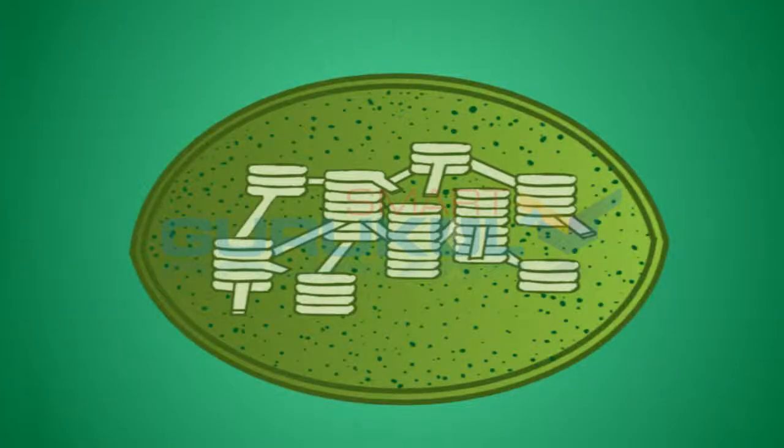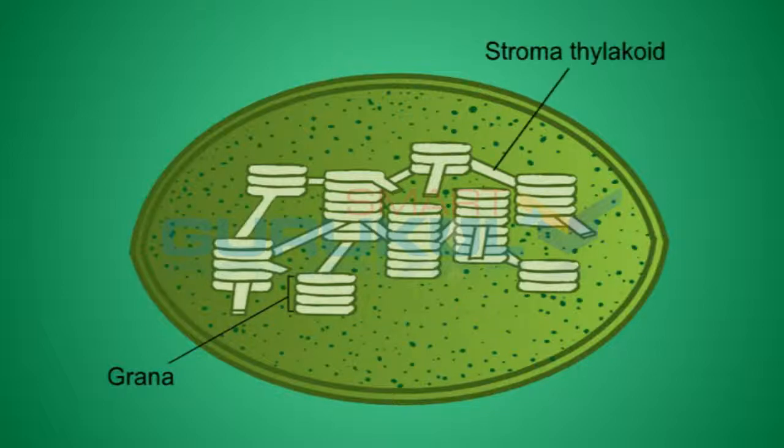These chloroplasts are oval-shaped and are filled with colorless fluid called stroma. Inside the stroma, many disc-like structures called thylakoid membranes are observed. These thylakoids are present like the piles of a coin, called grana. The grana are connected by stroma thylakoid.